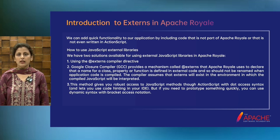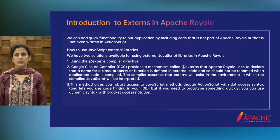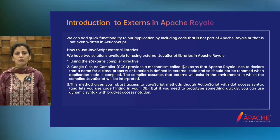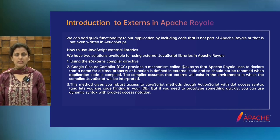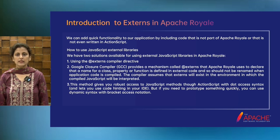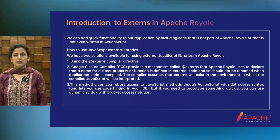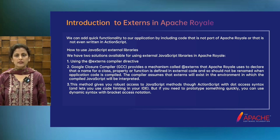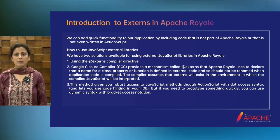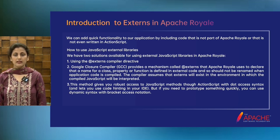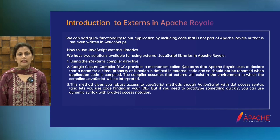It is a robust method. It allows you to access JavaScript methods seamlessly through ActionScript, using familiar dot-access syntax and benefiting from code hinting in the IDE. The second solution is GCC — Google Closure Compiler. Apache Royale leverages this mechanism to let the compiler know that certain identifiers defined in external code should not be renamed.